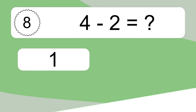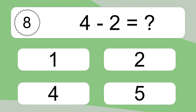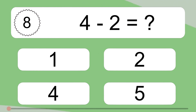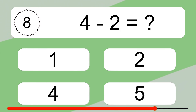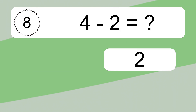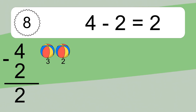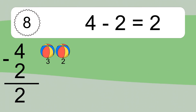4 minus 2 equals what? 4 minus 2 equals 2. Let's count it: 3, 2.